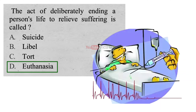Euthanasia refers to deliberate action taken with the intention of ending a life in order to relieve persistent suffering. In euthanasia, a doctor is allowed by law to end a person's life by a painless means as long as the patient and their family agree.